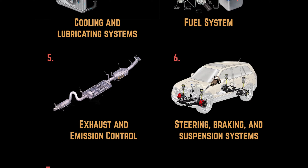Number six: the steering, braking, and suspension systems. This supports and controls the vehicle. The suspension system creates a smooth ride by letting the vehicle's tires take the impact of the road. The steering allows the driver to control the vehicle's direction and where it's going. And lastly, the braking system produces friction to slow or stop the vehicle.